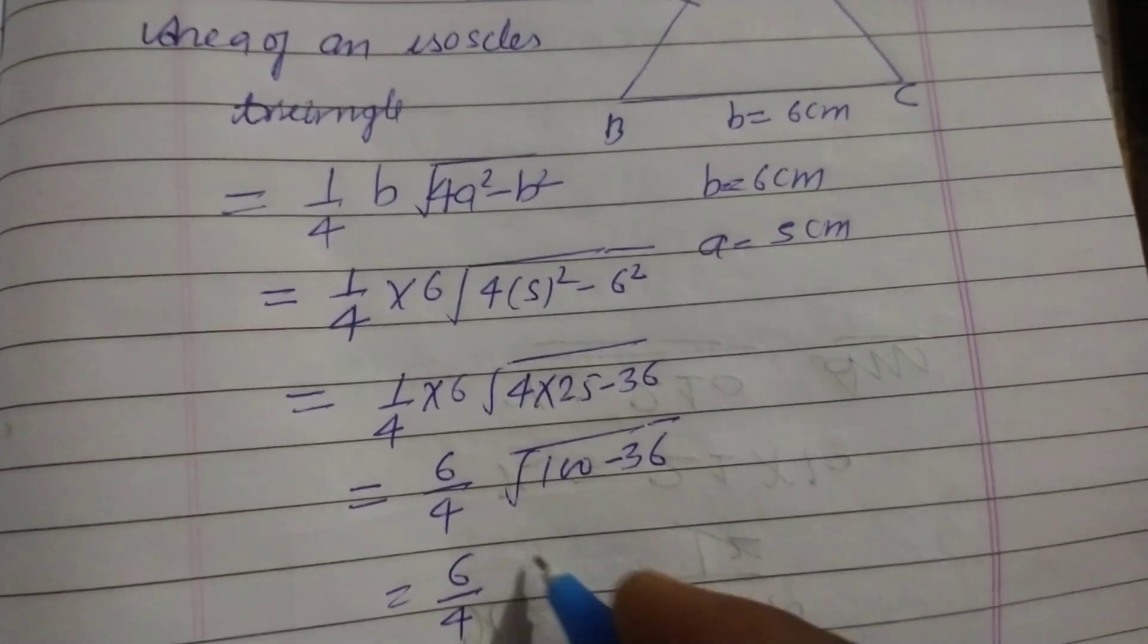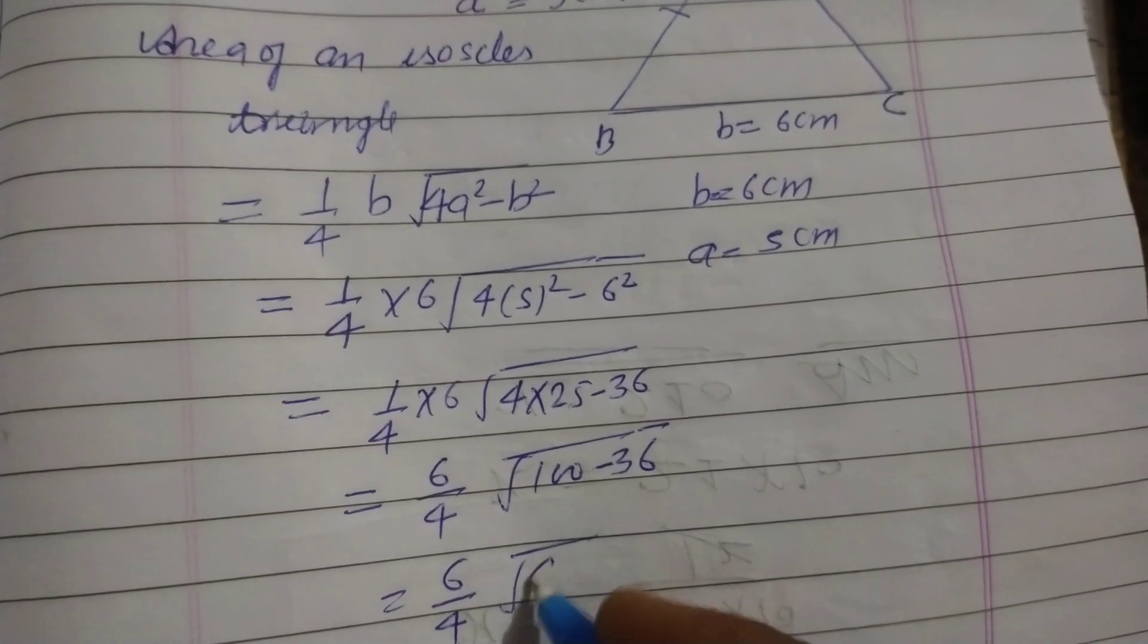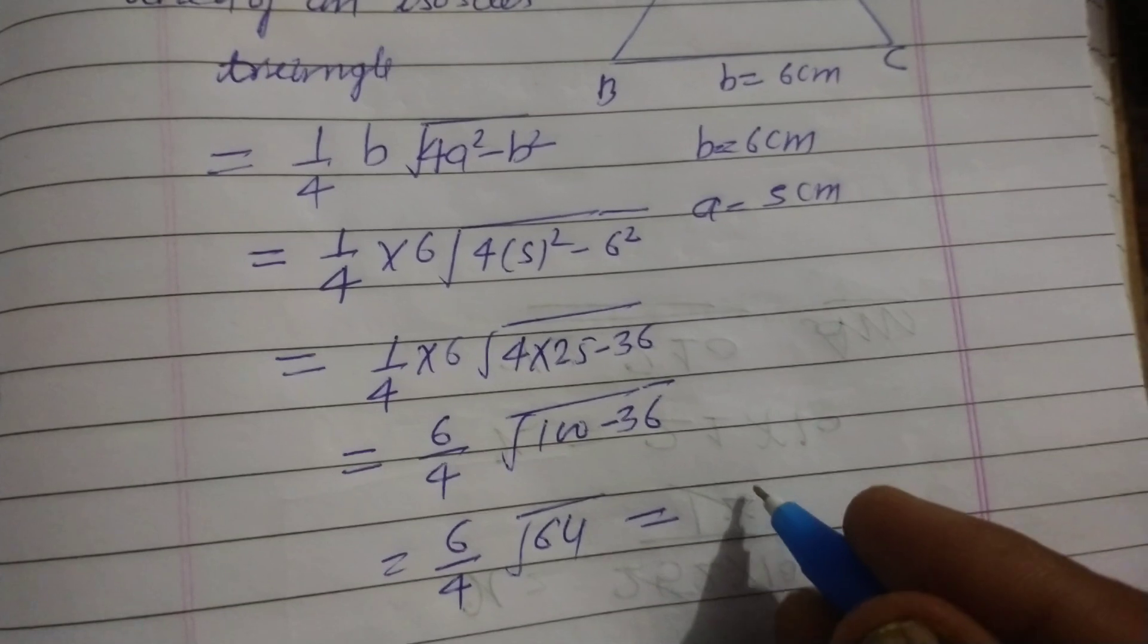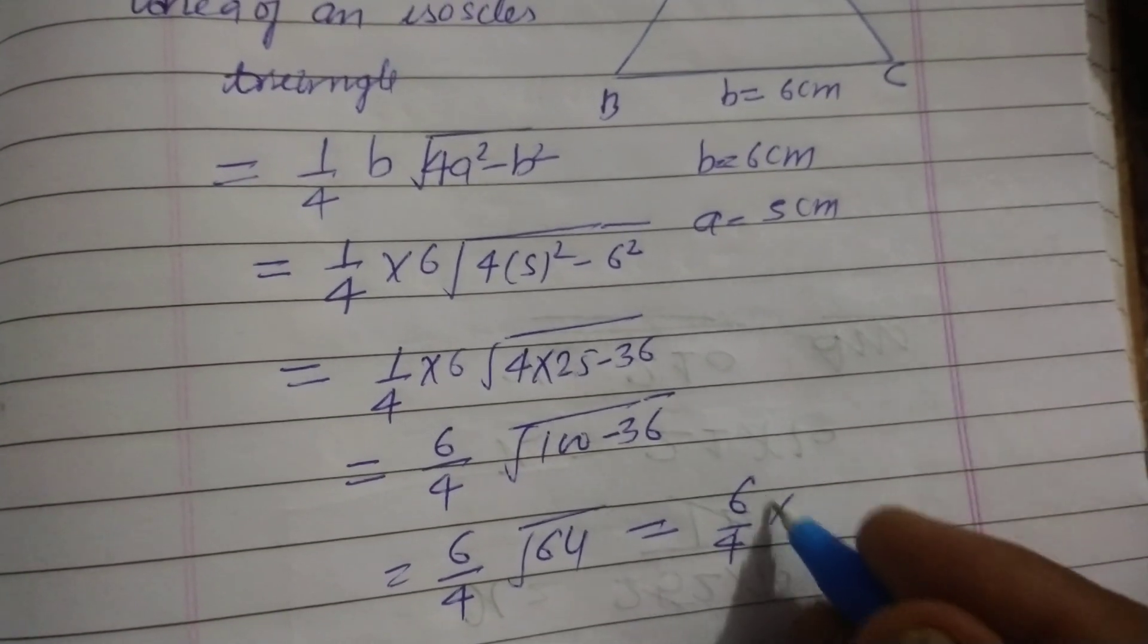6/4, this is 64. 100 minus 36 is 64, and the square root of 64 is 8.